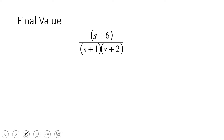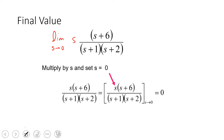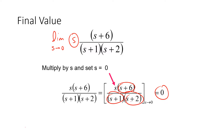For the final value theorem, multiply by s and take the limit as s goes to zero. In this case the numerator goes to 2 and the denominators go to 6 and 1, but the leading s factor goes to zero. So zero multiplied by anything will be zero — the final value is zero.